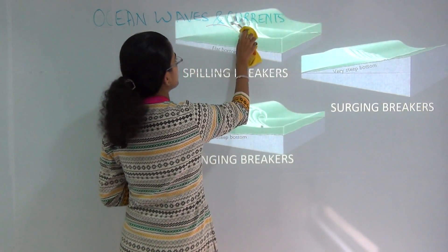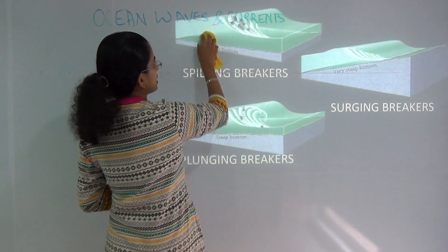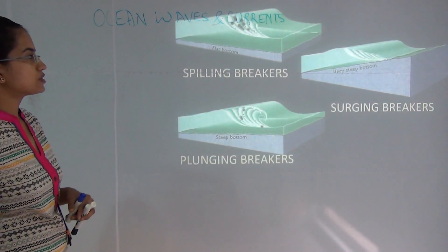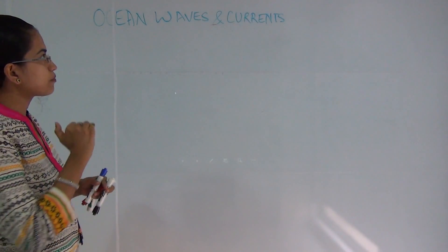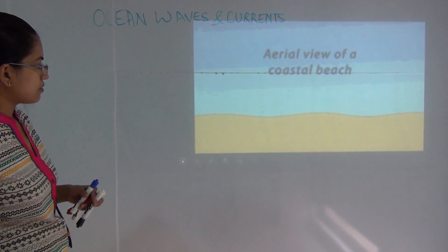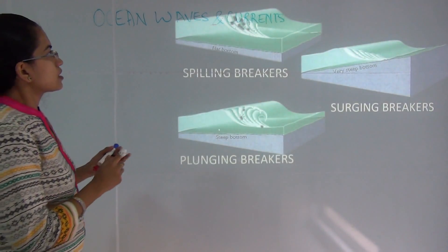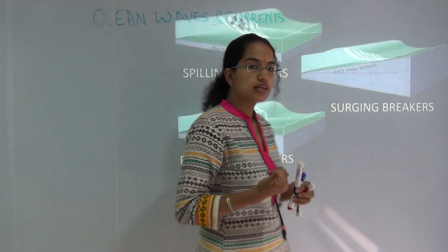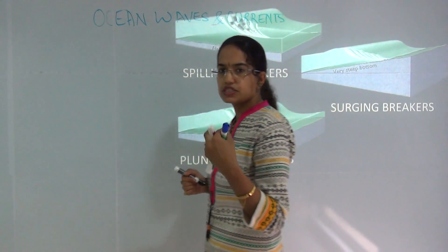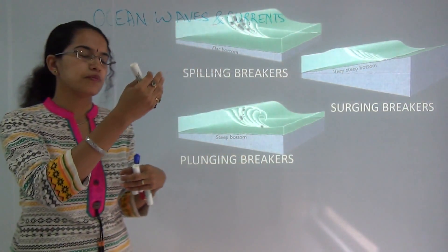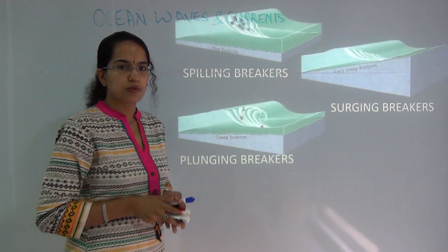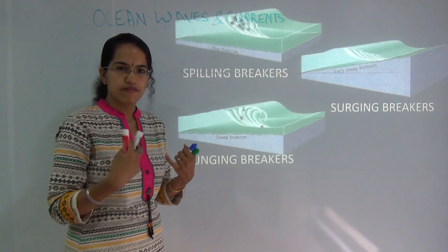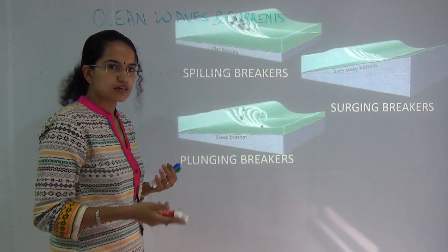We have already talked about waves and their strengths. Now we will talk about currents. Currents are forces affected by waves or winds. Under currents, we have warm currents which run from the equator towards the poles, and cold currents running from the poles towards the equator — influenced by wind, gravity, friction, and other forces.